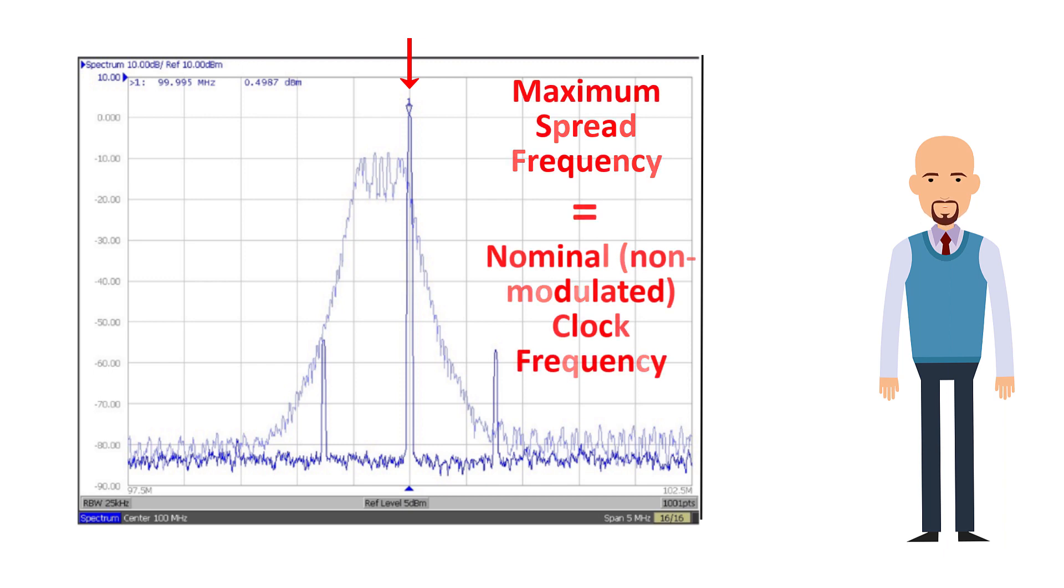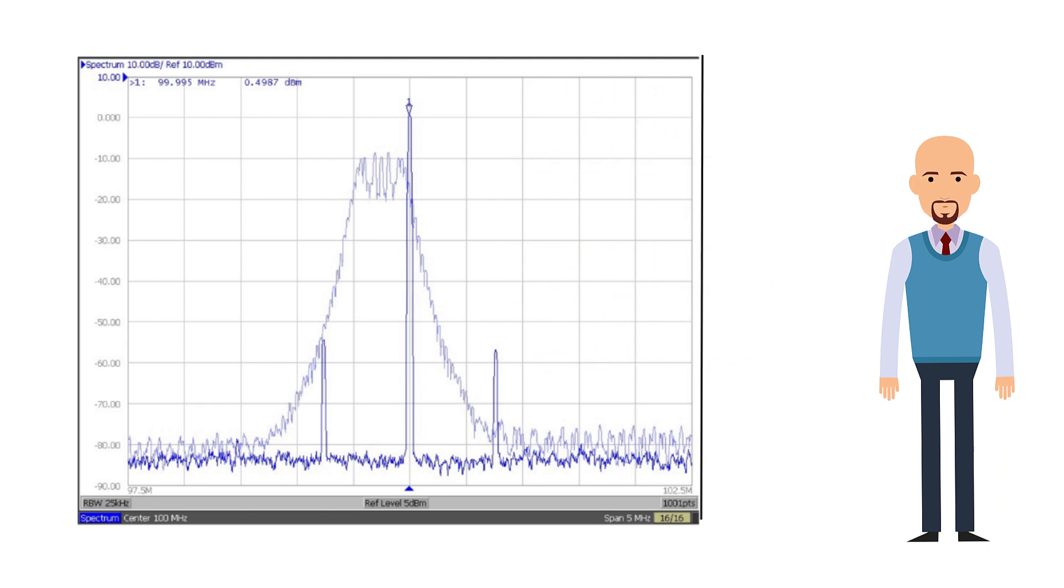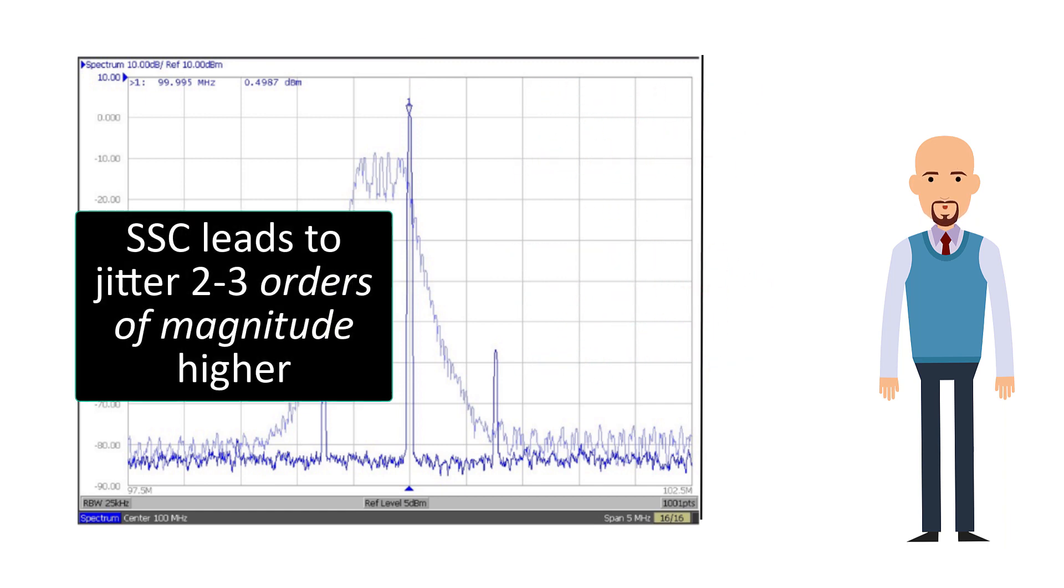We see here that the spread spectrum modulation creates many spurs that can increase the RMS jitter by two or even three orders of magnitude.